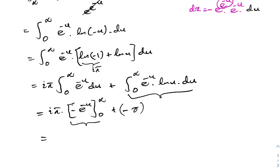Applying the limits gives us minus gamma plus i times pi. So we have a complex answer. If you like to watch this type of video, please subscribe to this channel. Thank you for watching.